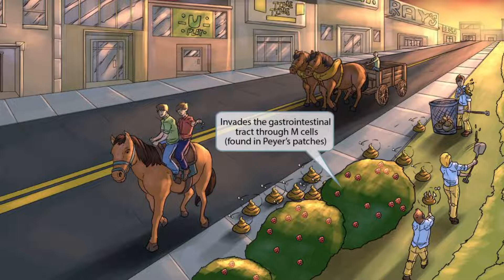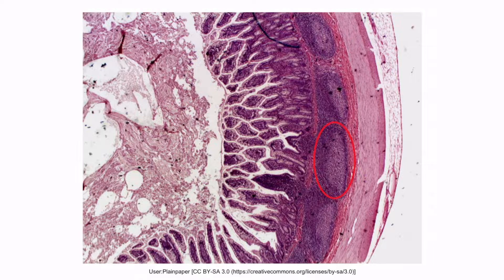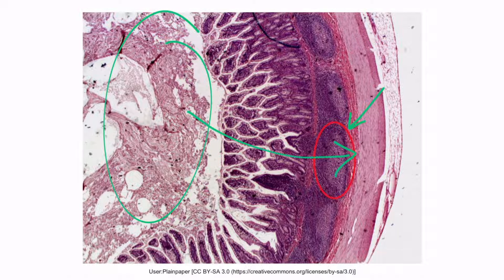Notice that we've included several raspberry patches towards the front of the image. Just like in our Salmonella video, these are here to help you remember that Shigella invades the gastrointestinal tract through M-cells, which are found in Peyer's patches. This is an image of Peyer's patches seen from a cross-section of the ileum — Shigella goes from the lumen into the intestinal tissue by gaining access through M-cells.